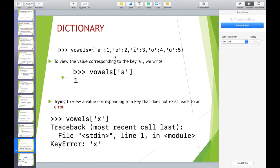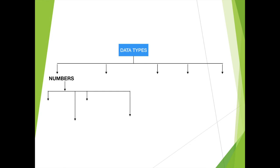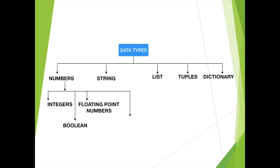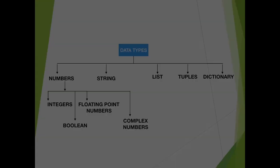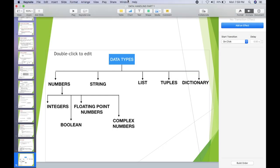The things I have shown you are summarized in this slide. Data types in Python can be classified as numbers, strings, list, tuples, and dictionary. Numbers can further be classified into integers, Boolean types, floating point numbers, and complex numbers. That is all about the core data types in Python. I will see you again in the next part of this chapter. Thank you very much.